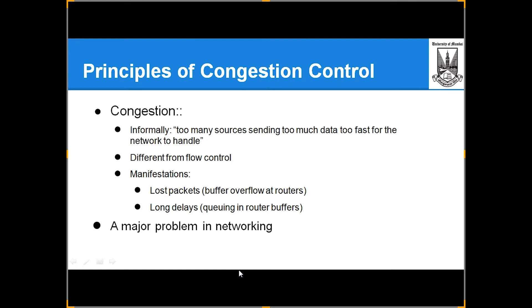Let's move on. This is the principle of congestion control. What is congestion control? When we have a lot of traffic in our network, that is what we call congestion — something which is stopping the flow of data. Informally: too many sources sending too much data too fast for the network to handle. Different from flow control. Manifestations: lost packets or long delays.